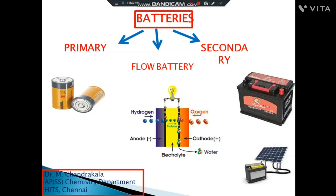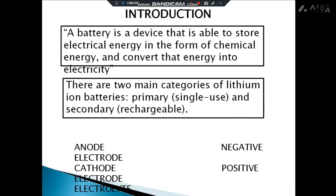Batteries are devices that store energy in the form of chemical energy and then provide electricity. The components of a battery are the anode, which is the negative electrode, and the cathode, which is the positive electrode. At the anode, oxidation takes place — that is, loss of electrons. At the cathode, reduction takes place — that is, addition of electrons.